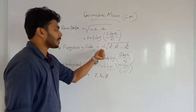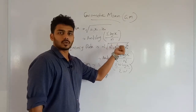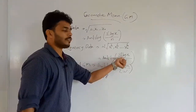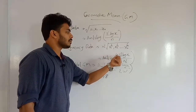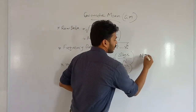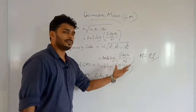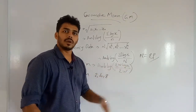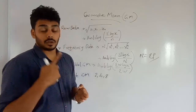For frequency data, the GM is the capital Nth root of x1 raised to f1, x2 raised to f2, up to xn raised to fn. Using logarithms, the formula becomes: antilog of (sigma f log x divided by capital N), where N is the total frequency. This also covers the weighted geometric mean.